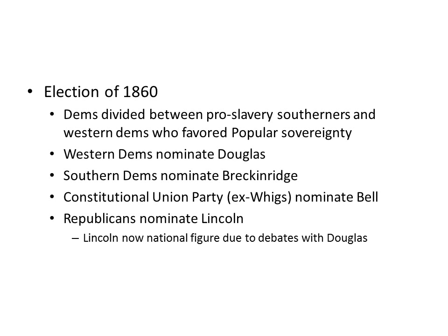In the election of 1860, the Democrats are divided between pro-slavery Southerners and Western Democrats who favor popular sovereignty. The Western Democrats are going to nominate Douglas, and the Southern Democrats are going to nominate Breckinridge. The Constitutional Union Party, which is the last remnant of the Whigs, are going to nominate a man named Bell, and the Republicans are going to come together behind Lincoln, who was really made into a national figure through those debates with Stephen Douglas.